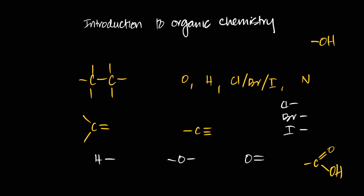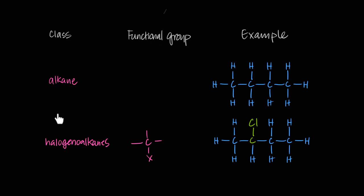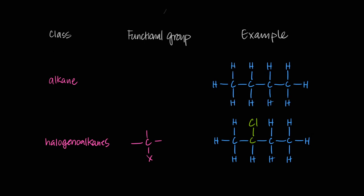The first class of compounds you'll encounter are alkanes. In alkanes, all carbon-carbon bonds are single, and carbon-hydrogen bonds are also single — nothing else but hydrogen and carbon. We call these saturated hydrocarbons. There is no functional group because everything else is compared to this — it's like a base class of compounds. They don't have to be in a straight chain; we'll also look at cyclic compounds later.